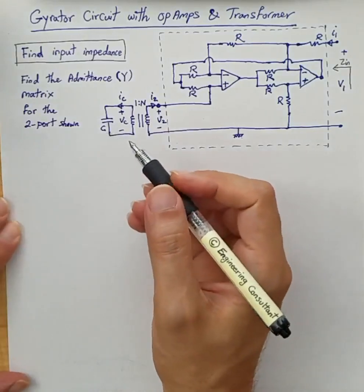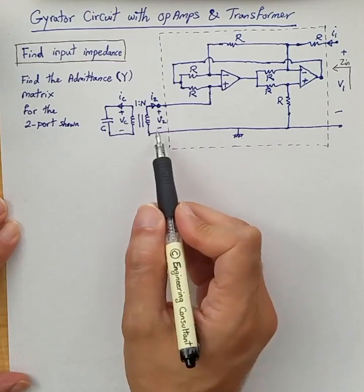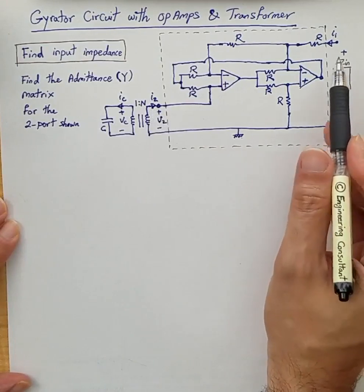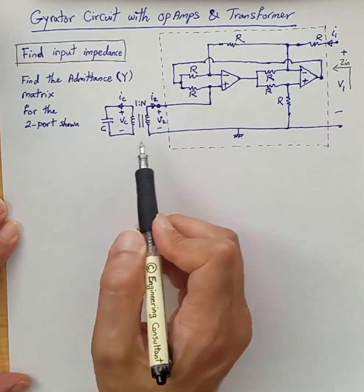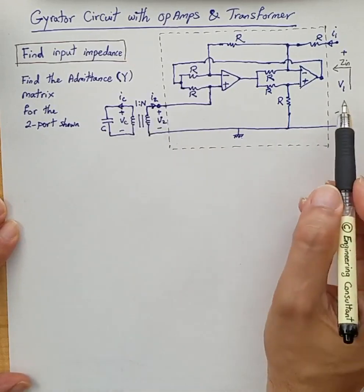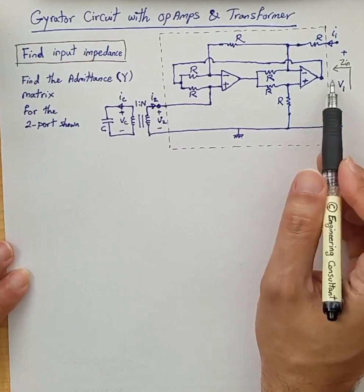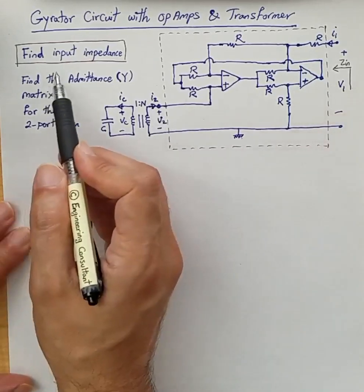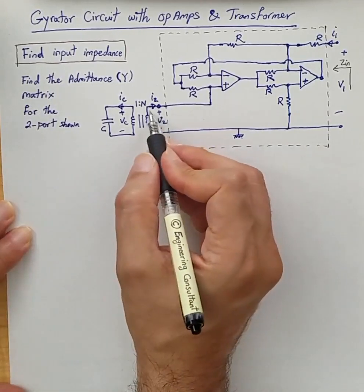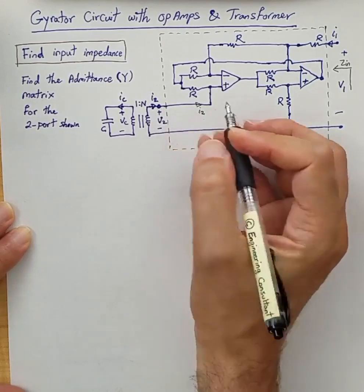This is an example of a gyrator circuit with op-amps and a transformer. In this circuit we have two ports: port 2 with voltage V2 and current I2 flowing into the port, and port 1 with voltage V1 and current I1. There is a load attached to port 2, which is a capacitor with an ideal transformer of 1-to-n ratio. We want to find the input impedance as seen from port 1, and also find the admittance matrix for this two-port.